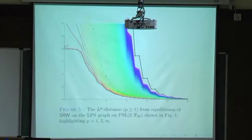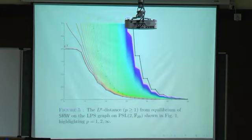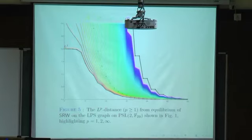This is a graph of how the L^p mixing time behaves as a function of p and the size of the graph. The most useful are typically L^1, L^2, and L^infinity, which correspond to the beginning, middle, and end of the range of p shown here.